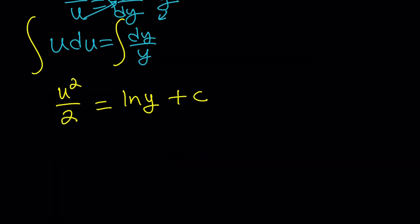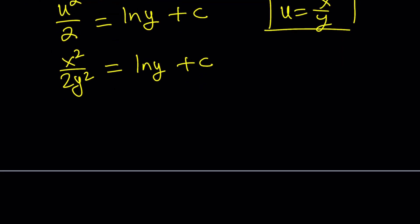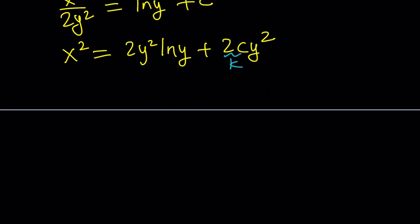So now at this point, we can replace u with x/y and just try to solve for whatever. So this becomes x²/y² divided by 2, so x²/2y² = ln(y) + c. And then I can isolate x² from here and write it as 2y²ln(y) + 2cy². Again, 2c is a constant. You can replace it with k and write this as x² = 2y²ln(y) + ky².